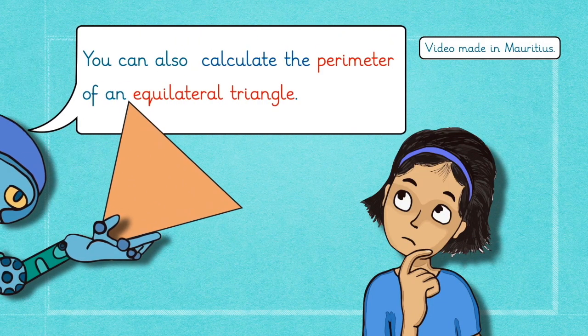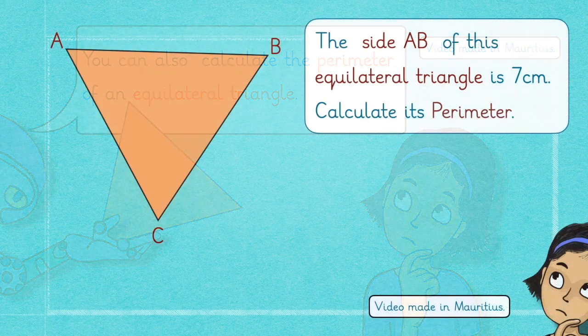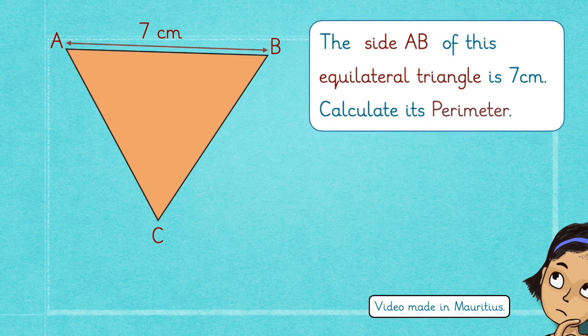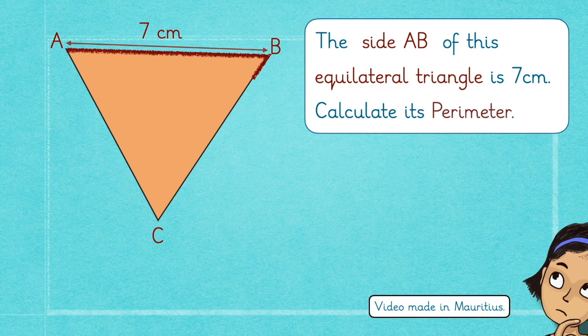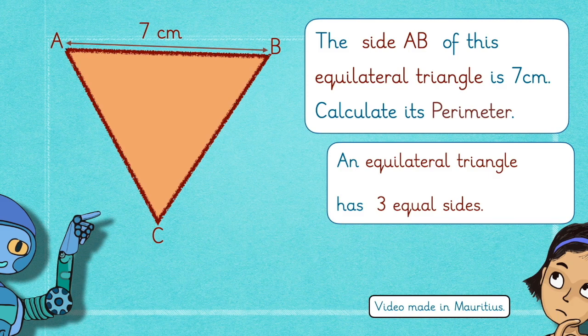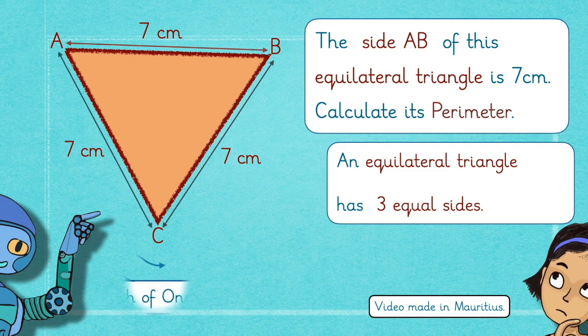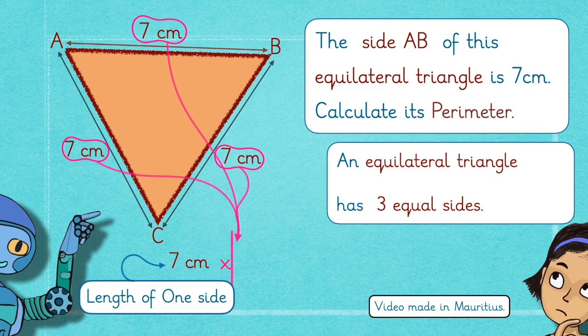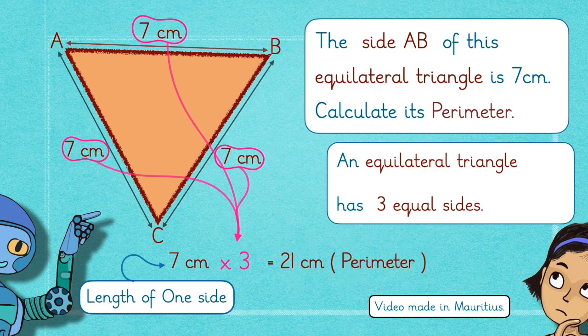Now, Ava, Inouane is going to explain to you how to calculate the perimeter of an equilateral triangle. Suppose the side of this equilateral triangle is 7 cm. Calculate its perimeter. Remember, an equilateral triangle has 3 equal sides. In this case, you take the length of one side and you multiply by 3 as an equilateral triangle has 3 equal sides. You will finally get the perimeter which is 21 cm here.